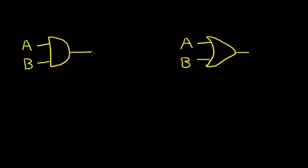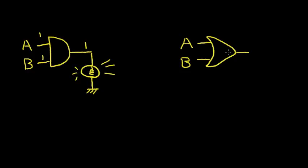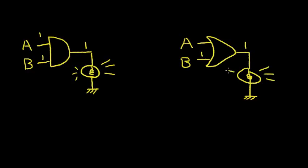We can think of a light bulb at this output tied to ground. So if the A input is at a logic 1 and the B input is at a logic 1, then only in that situation will the output be a logic 1, and we'll apply a voltage and our light will shine. In the OR gate, if we have a light bulb attached to the output with the filament tied to ground, if either input is at a 1 — if B is at a 1, it doesn't matter what A is doing — the output will be at a 1 and the light will shine.